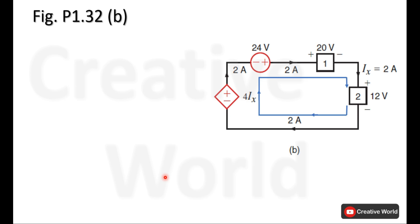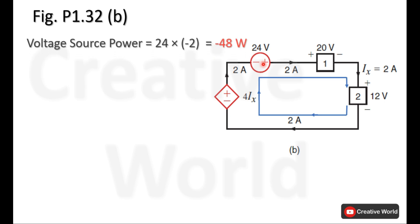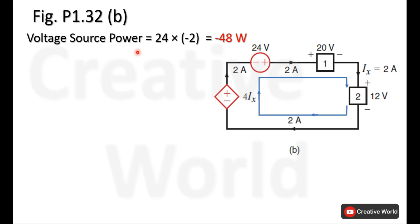We will start power calculations from the voltage source. The voltage source power will be the voltage across this element — 24 volts — multiplied by the current through it — 2 amperes. But this current is entering from the minus terminal and leaving from the positive terminal, so this current will be taken with a minus sign. The power of the voltage source is minus 48 watts, indicating that 48 watts is being supplied by this voltage source.